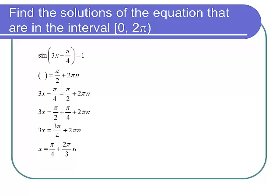And now I set 3x minus π over 4 equal to π over 2 plus 2πn, and what do I do here? I have to add π over 4 to both sides, and I have to divide by 3. So I end up with x equaling π over 4 plus 2π over 3 n. And then that's our formula. That's what we're going to use to find the actual angles that we need to solve this problem.